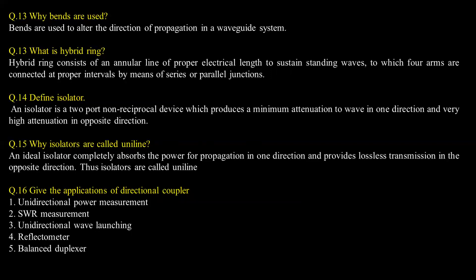Why are isolators called uniline? An ideal isolator completely absorbs the power for propagation in one direction and provides lossless transmission in the opposite direction. Thus, isolators are called uniline. Give the applications of directional coupling: unidirectional power measurement, SWR measurement, unidirectional wave launching, reflectometer, balanced coupling.